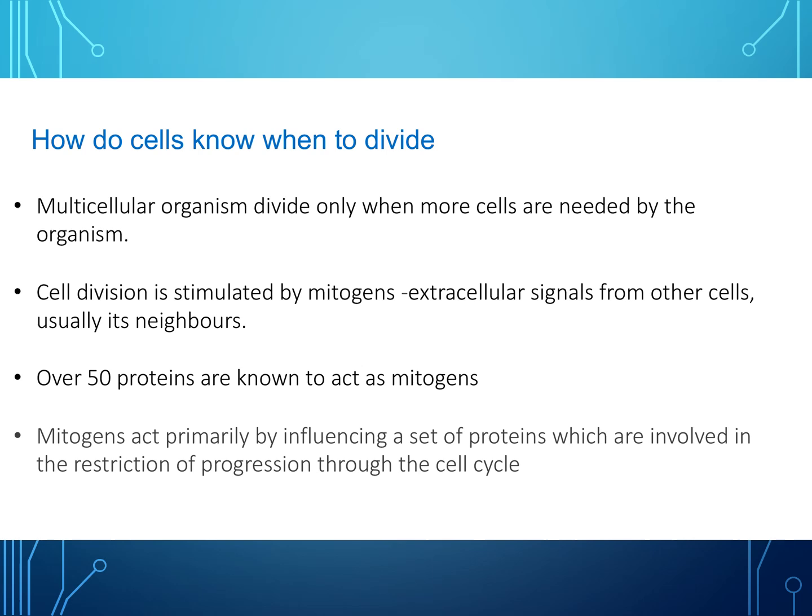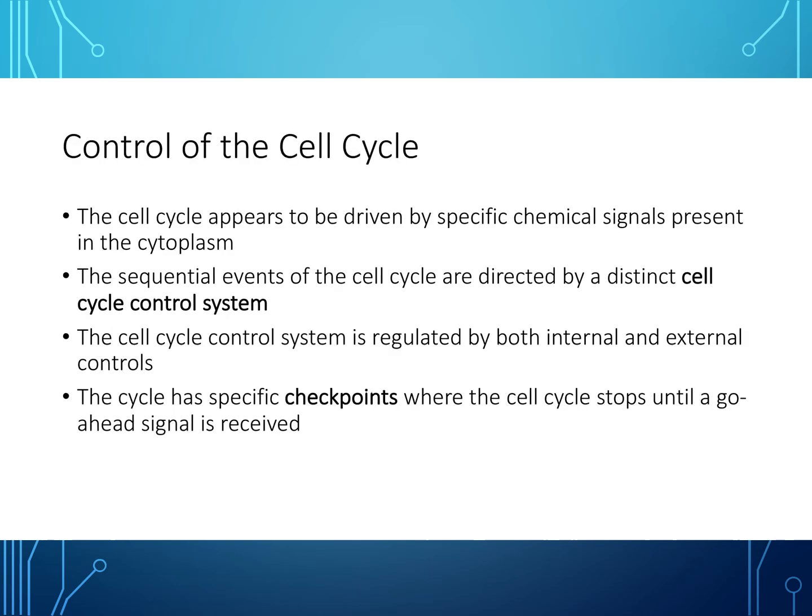How do cells know when to divide? Multicellular organisms divide only when one or more cells are needed by the organism. Cell division is stimulated by mitogens, which are extracellular signals from other cells — usually neighboring cells. Over 50 proteins are known to act as mitogens. Mitogens act primarily by influencing a set of proteins which can involve the restriction of progression through the cell cycle.